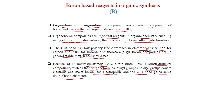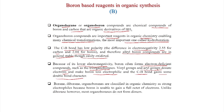Boron is not very electronegative, so because of its lower electronegativity, boron often forms electron-deficient compounds such as triorganoboranes. Vinyl groups and aryl groups donate electrons and make boron less electrophilic, and the C-B bond gains some double bond character. When vinyl and aryl groups are present, boron becomes less electrophilic. Diboron and organoborons are classified in organic compounds as strong electrophiles because boron is unable to gain a full octet of electrons — there are only 6 electrons on boron because it is tri-coordinated.